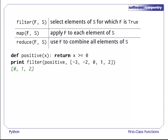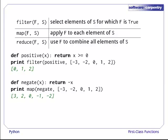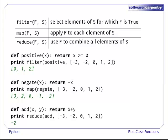if positive is true when its argument is greater than or equal to zero, then filter of positive and a list of numbers returns a list of non-negative numbers. If negate changes the sign of its argument, map of negate returns a list of negated values, and of course, using reduce with add returns the sum of the values in the list.